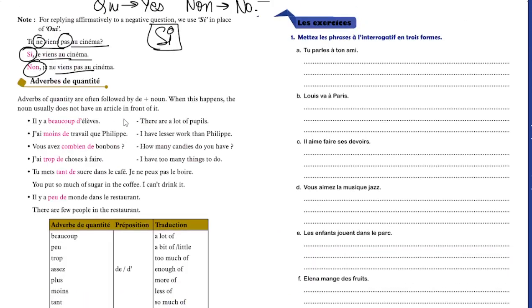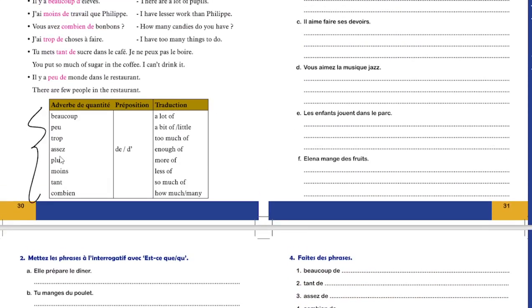Il y a beaucoup de gens là. There are a lot of people. J'ai moins de travail que Philippe. I have less work than Philippe. Vous avez combien de bonbons? How many candies do you have? J'ai trop de choses à faire. I have too many things to do. Tu mets tant de sucre dans le café. You put so much sugar in the coffee. Je ne peux pas le boire. I can't drink it. Il y a un peu de monde dans le restaurant. There are a few people in the restaurant. Basically, you have to learn all this for making proper sentences.